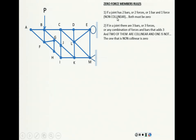Rule number two: if in a joint there are three bars, or three forces, or any combination of forces and bars — only three, not four, not five, not two — and two of them are collinear and one is not, then the one that is non-collinear is zero. Those are the two rules. They are really easy.